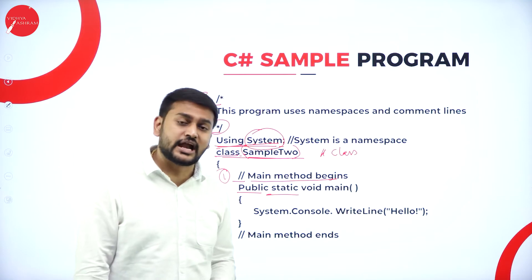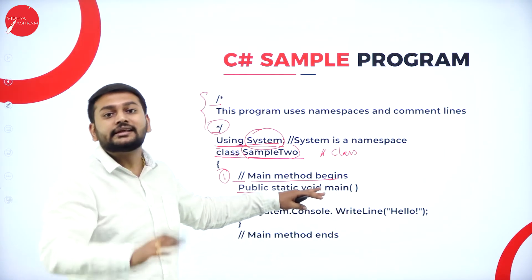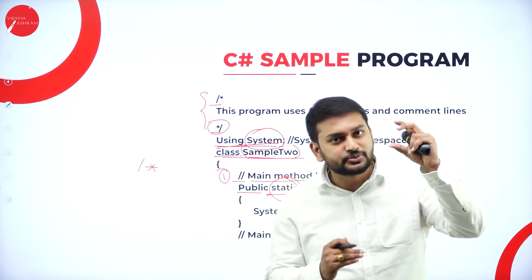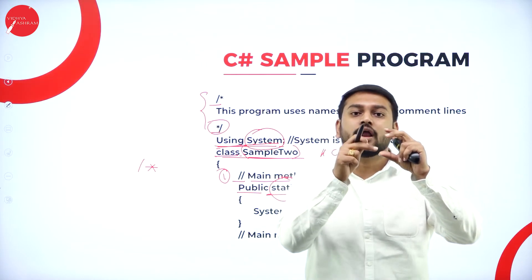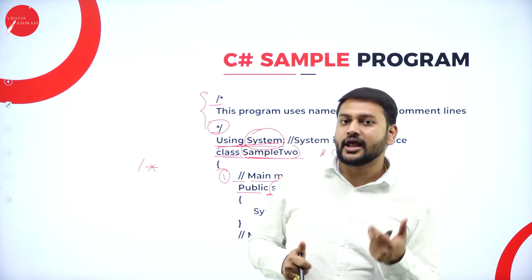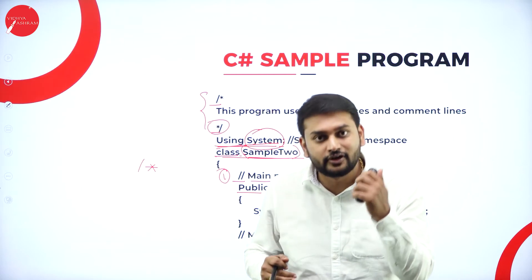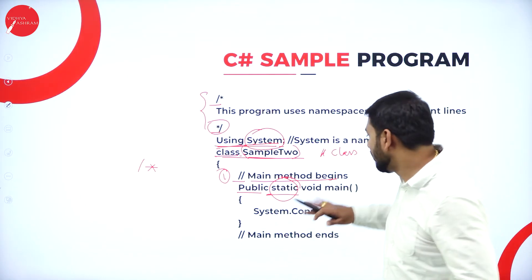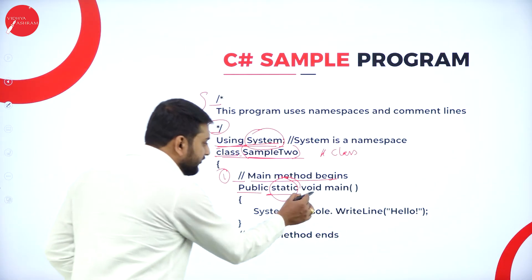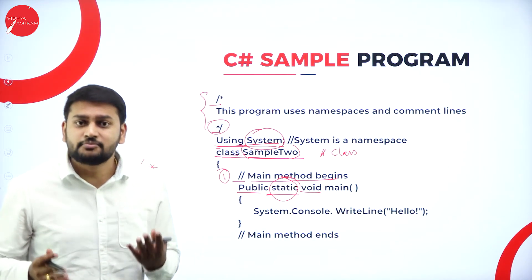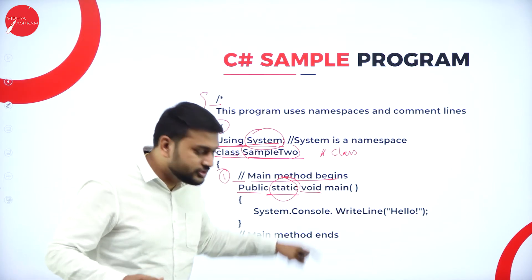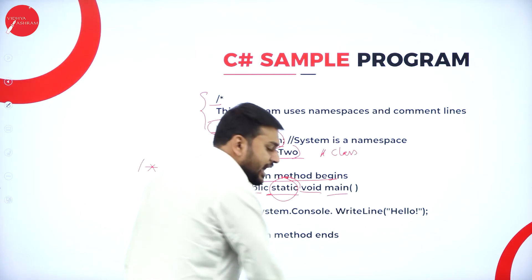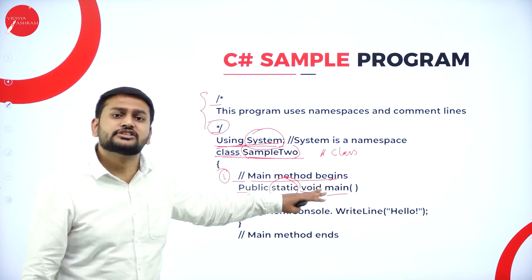After 'public', I have 'static'. The meaning of static is: I can call this function without creating an object. Normally, before calling any function you need to create an object for that class and use that object to call it - just like needing a phone to call someone. But by making this function static, I don't require any object to call it. Next, I have 'void' - void is the return type, meaning this function does not return any value. Then comes the name of the function: 'main'. The execution of the program starts from the main function.